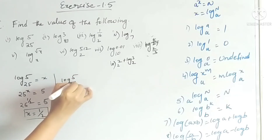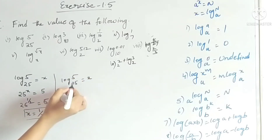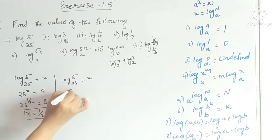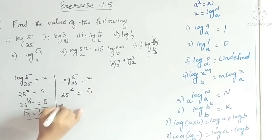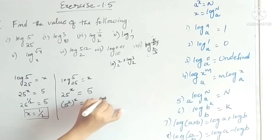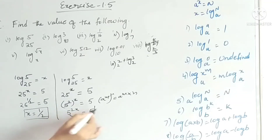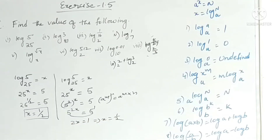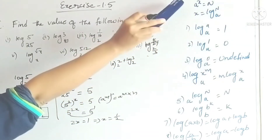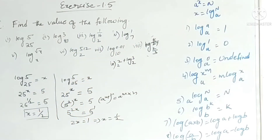Alternatively, log 5 base 25 equals x in exponential form means 25 to the power x equals 5. We write 25 as 5 squared, so 5 squared whole power x equals 5. Using the rule (a^m)^n = a^(mn), we get 5 to the power 2x equals 5 to the power 1. Since bases are equal, 2x equals 1, so x equals 1/2. The key concept is converting logarithmic form to exponential form.